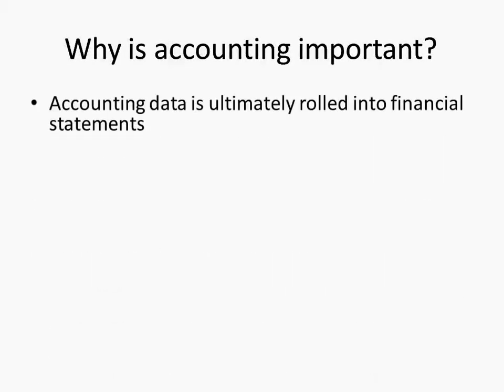Why does any of this really matter? If they forgot to record a sale, didn't get rid of the receivable, their cash doesn't balance. Ultimately, all this accounting data — all these individual transactions — become rolled up into the financial statements. The income statement, balance sheet, statement of cash flows, statement of retained earnings or stockholders' equity. If you don't make the right transaction, your financial statements will be wrong.